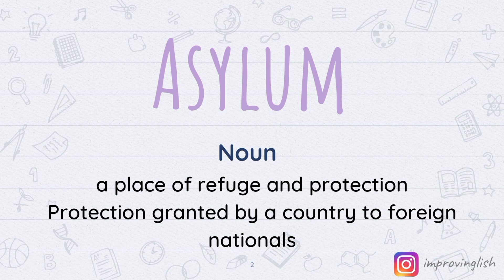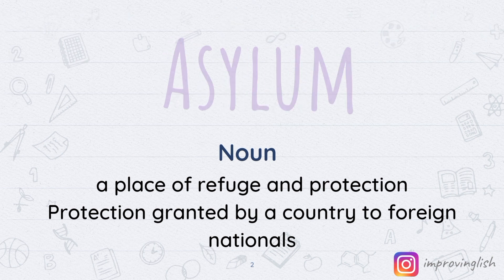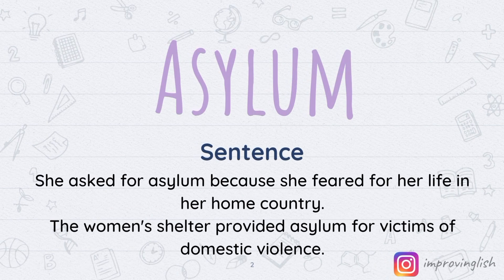Now we have two sentences related to these meanings. The first one is: 'She asked for asylum because she feared for her life in her home country.' She was afraid that someone might harm or kill her in her home country, so she asked for asylum — meaning she went to another country to say she is not safe and her life is in danger.